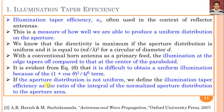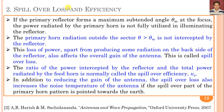The second efficiency parameter is spillover loss and spillover efficiency. If the primary reflector subtends a maximum half-angle θ_m at the focus, the power radiated by the primary horn is not fully utilized in illuminating the reflector. The primary horn radiates outside the region θ_m, which is not intercepted by the reflector, causing power loss and some radiation on the back side of the reflector, reducing the overall gain of the antenna.